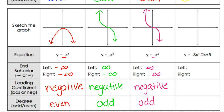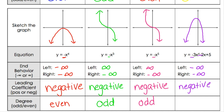The final one is -3x⁴ - 2x + 5, which looks something like this. We can see that both ends — the left and the right — are pointing downwards towards negative infinity. Our leading coefficient out in front is negative, and our degree on this one is fourth degree, which is even.